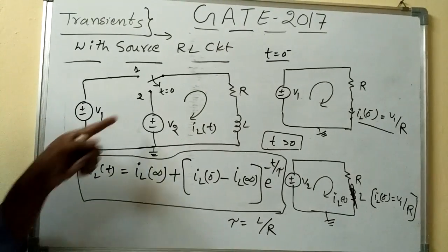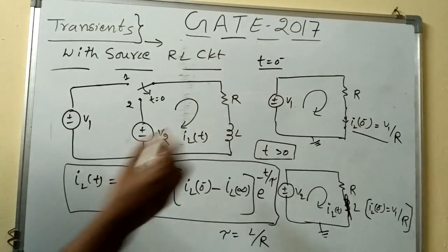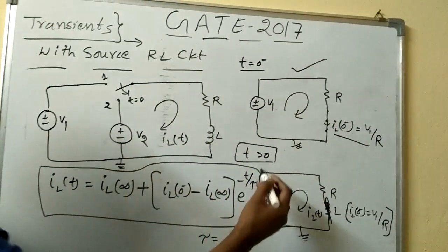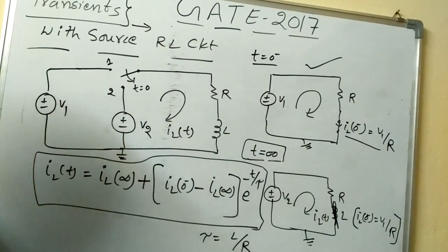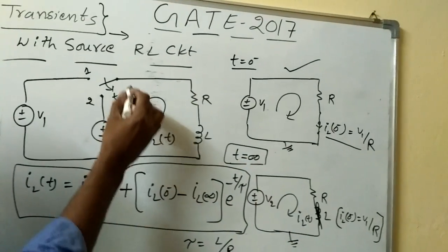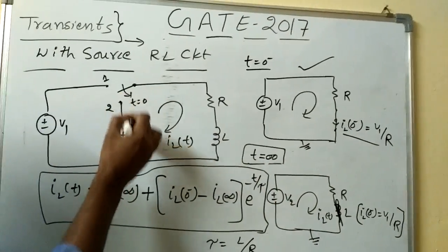Now how to find iL of infinity? So, go for this circuit, iL of 0 minus, this is the circuit. For iL of infinity, we need a circuit at t equal to infinity. When t equal to infinity,